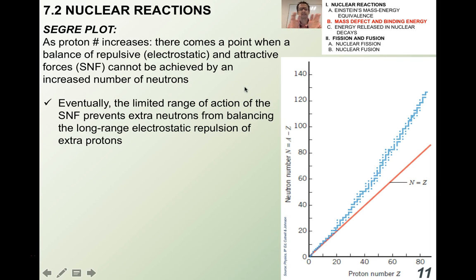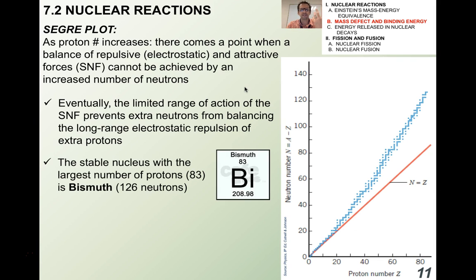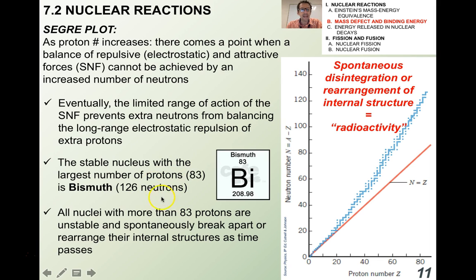The limited range of action of the strong nuclear force, which only acts over about 10 to the minus 15 meters and is zero for bigger distances, prevents extra neutrons from balancing the long-range electrostatic repulsion of extra protons. Eventually the nucleus becomes unstable — that turns out to happen with bismuth, which is the stable nucleus with the biggest number of protons at 83. Any nucleus with more than 83 protons tends to be unstable, and this spontaneous disintegration we refer to as radioactivity.